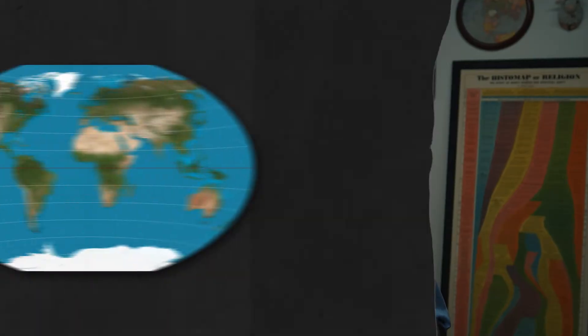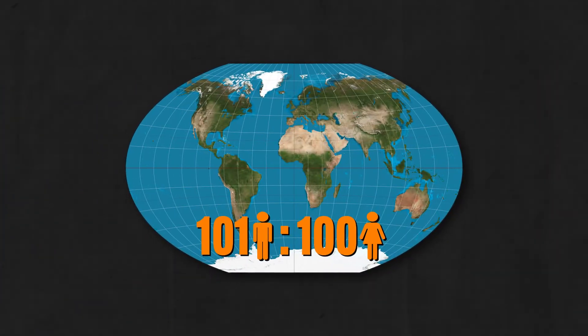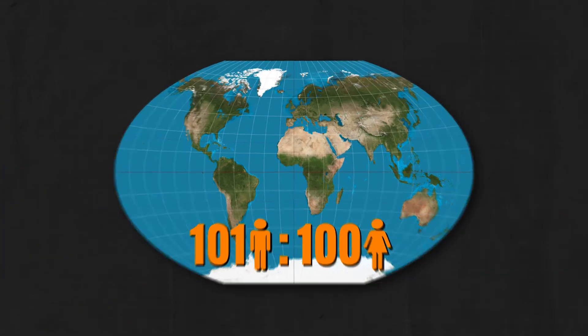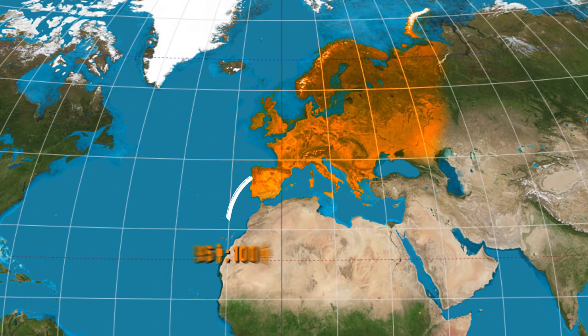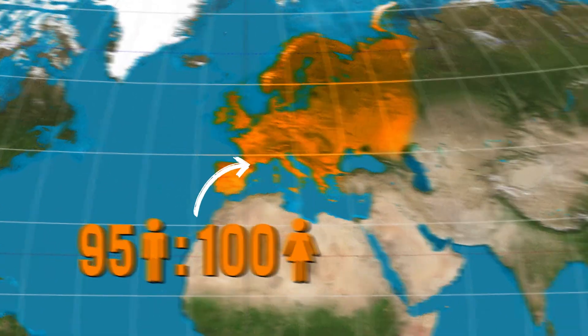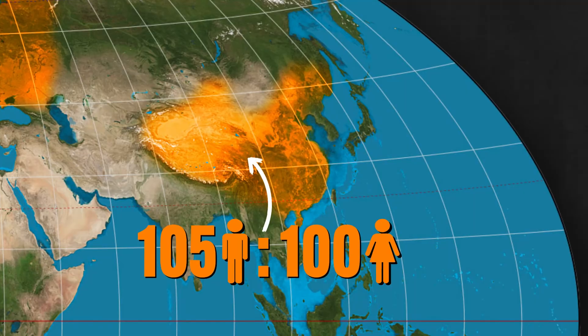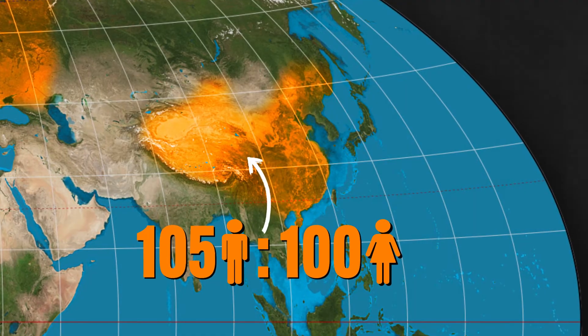For example, globally the sex ratio is about 101 men to 100 women. But then regionally, in Europe for example, it's 95 men to 100 women. Or nationally, over in China, it's about 105 men to 100 women.